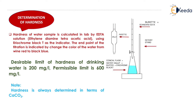Moving on to the determination of hardness: hardness can be determined by the titration test. In this test, EDTA (ethylene diamine tetra acetic acid) solution is taken in a burette, and Eriochrome Black T is used as an indicator.